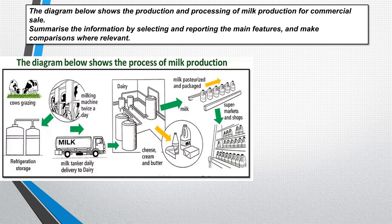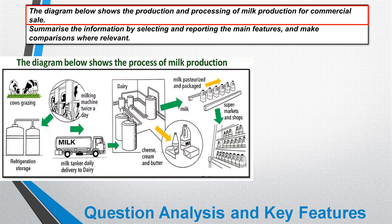Here is the first example question. The opening statement reads: 'The diagram below shows the production and the processing of milk production for commercial sale. Summarize the information by selecting and reporting the main features and making comparisons where relevant.' So there's just one diagram here, and as ever we need to analyze the question and the diagram to make sure we understand it. The title tells us the diagram shows the process of milk production, and we want to identify the different steps of the process.